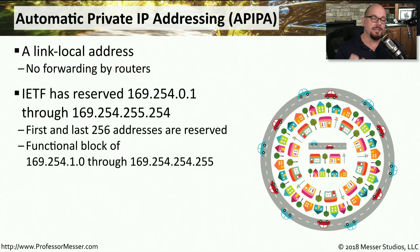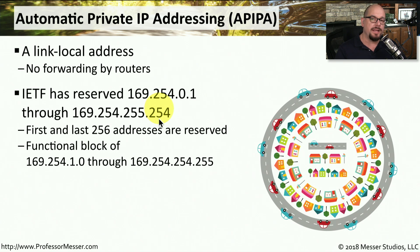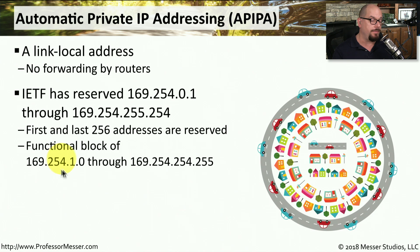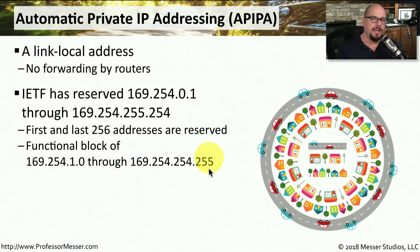There is a range of IPv4 addresses assigned just for APIPA, and this range is 169.254.0.1 through 169.254.255.254. The first and last 256 addresses are reserved, which means the available IP addresses for a workstation fall in the range from 169.254.1.0 through 169.254.254.255. So if you turn on a device and find you're not able to communicate to the internet, and the IP address falls in this range, you know you've been assigned an APIPA address.